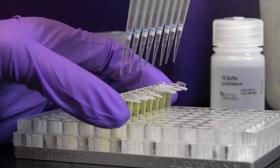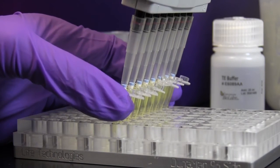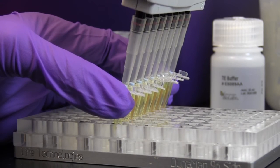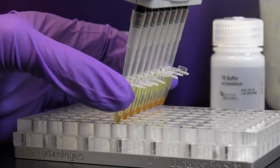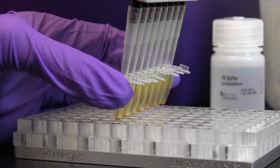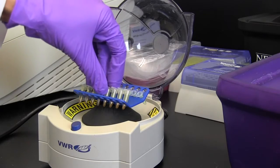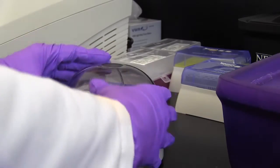Remove the tube or plate containing the dried bead pellet from the magnet and elute the library from the beads by adding 33 microliters of 0.1X TE buffer, followed by mixing well. After a quick spin, incubate at room temperature for 2 minutes.